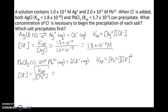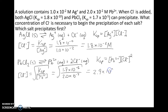The solubility product constant was given as 1.7×10⁻⁵, and the concentration of lead in solution was 2.0×10⁻² moles per liter. We calculate that and then take the square root. The concentration of chloride we get is 2.9×10⁻² moles per liter. So we need at least 1.8×10⁻⁸ moles per liter chloride to start precipitation of silver chloride, and 2.9×10⁻² moles per liter to cause lead chloride to precipitate.